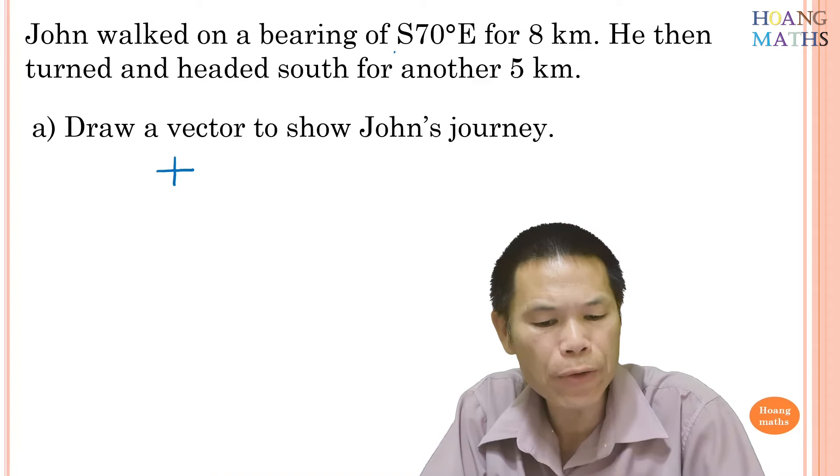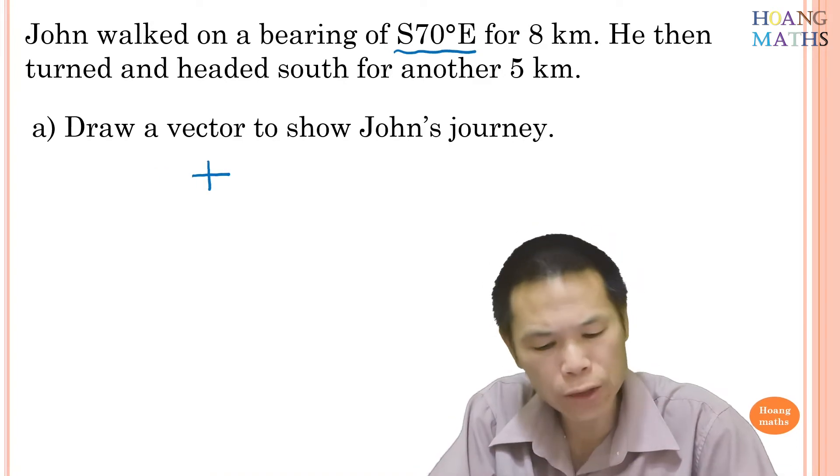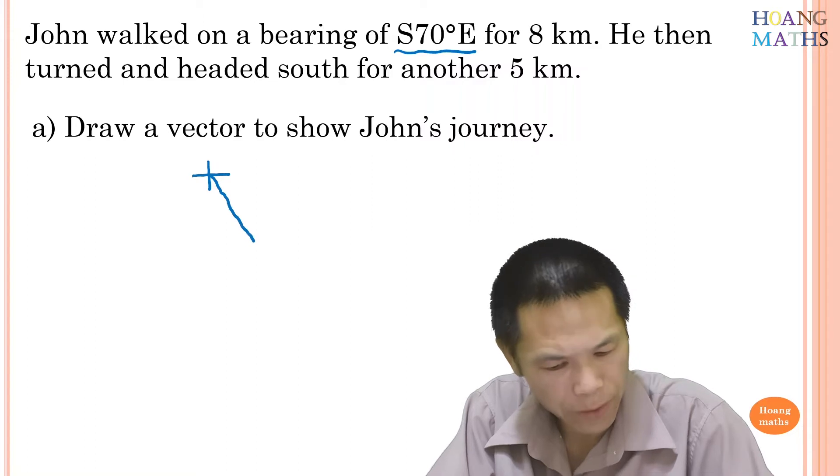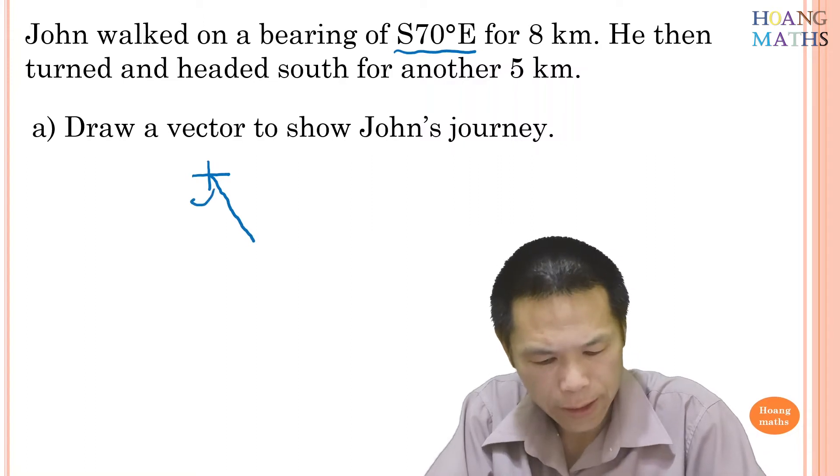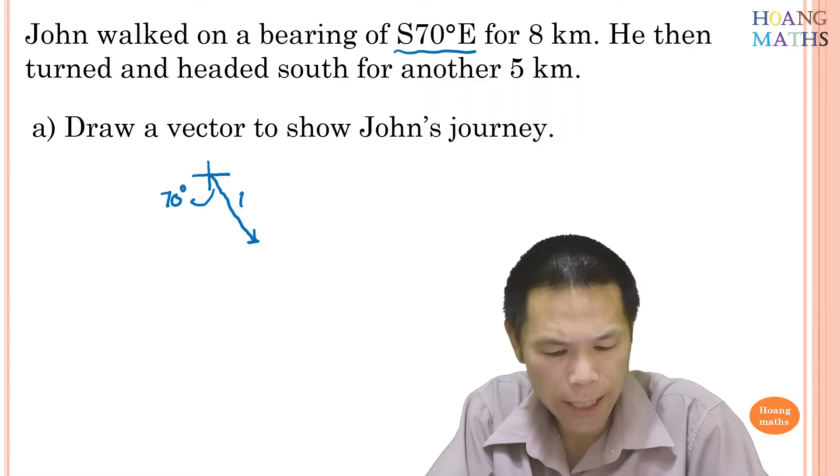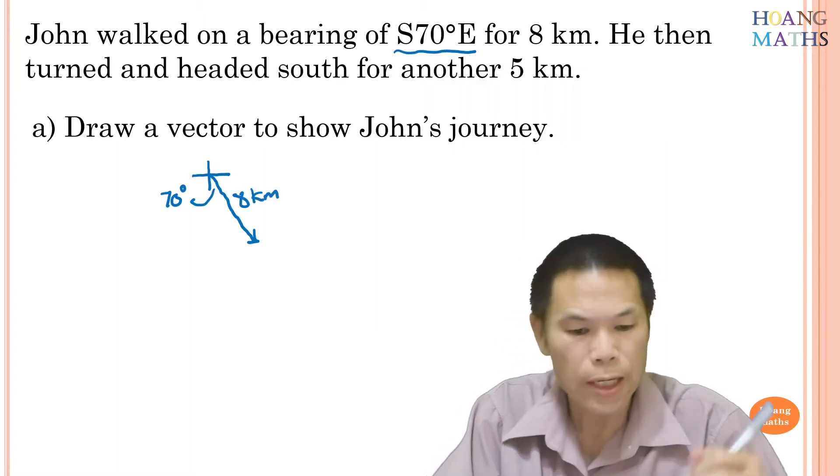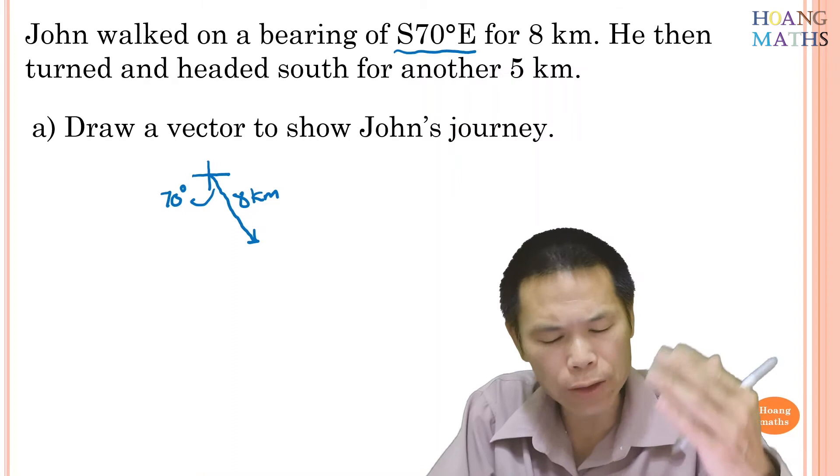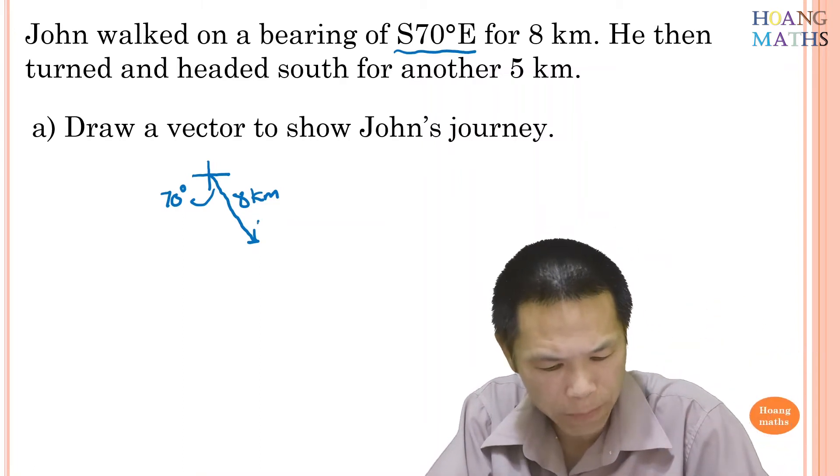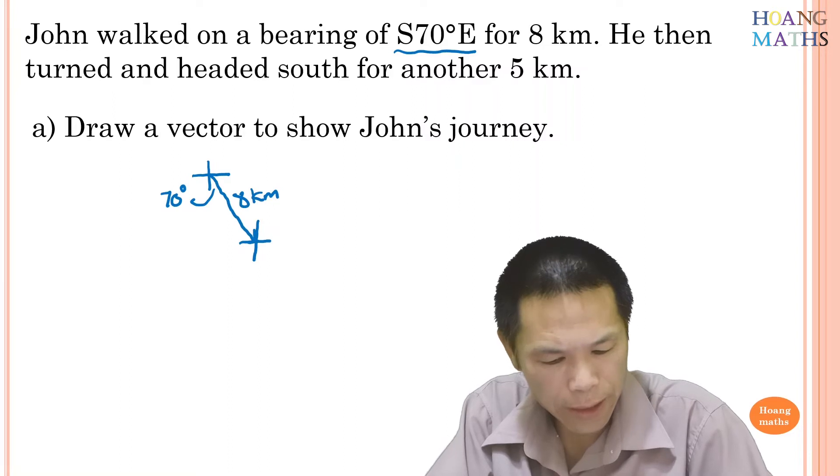So he walked on a bearing of south 70 degrees east. So this is 70 degrees and this is 8 kilometers. He then turned and headed south for another 5 kilometers, so the reference point now is here and come down south for 5 kilometers. There you go, done.